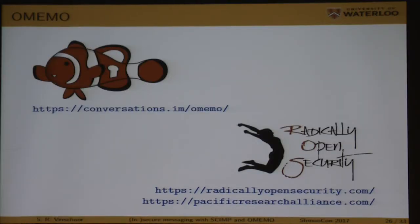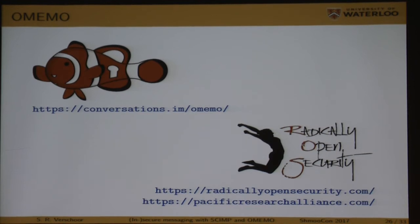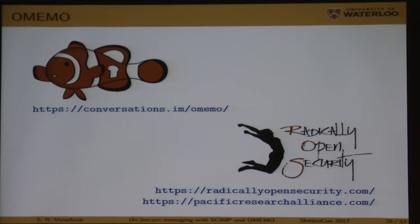That was the main result from our SCIMP analysis. There are several more bugs in the code that can be leveraged by an attacker to completely destroy the security of the protocol — I'd recommend reading the paper. Luckily, Silent Circle has discontinued SCIMP and switched to a signal-based protocol. I haven't looked at their new implementation, and I would hope someone would inspect it because this security is important.